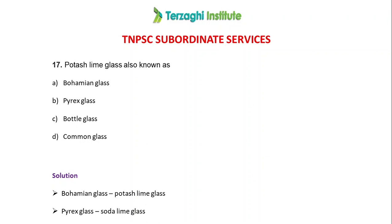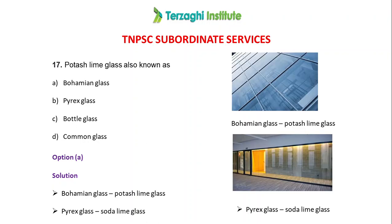Next question on types of glass. Soda lime glass is one type. Bohemian glass is used in high-rise buildings and corporate offices — it appears as a blue glass through which you can see the heat outside but see what is happening outside as well. Pyrex glass is a transparent glass. The answer is Bohemian glass.